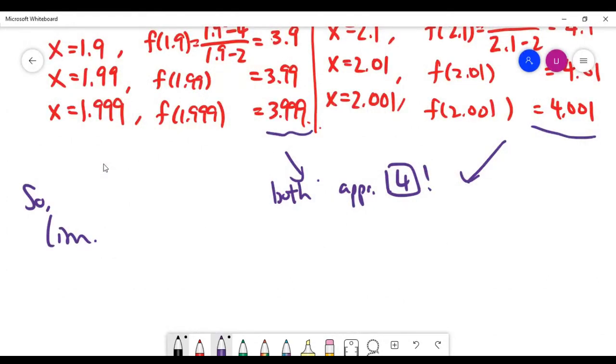So when we take the limit as x goes to 2 for this particular problem, the answer is actually 4, based on the approximation.